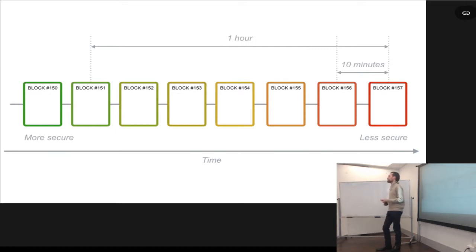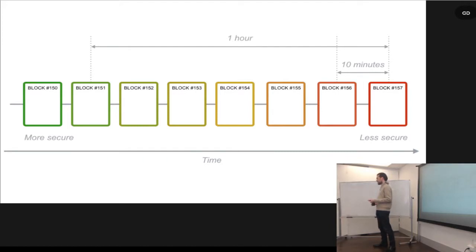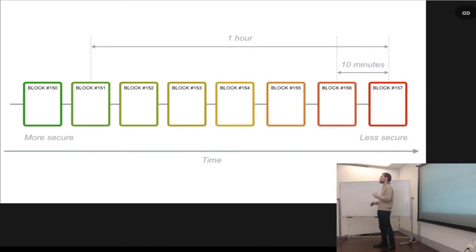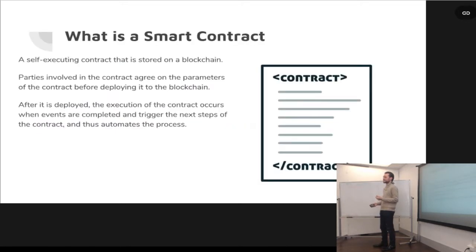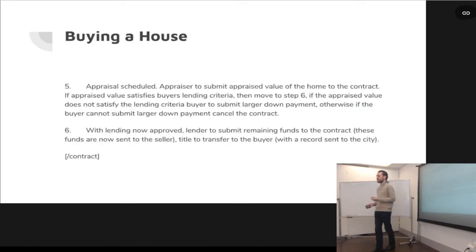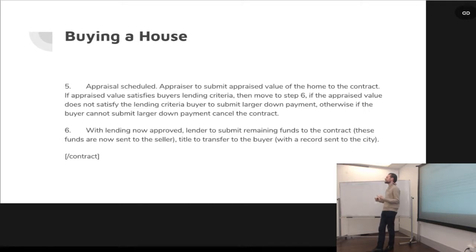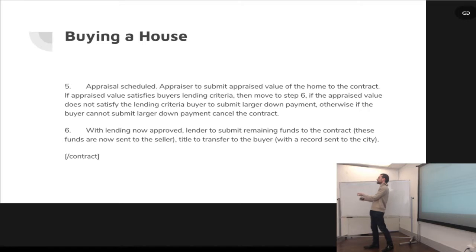The thing that would stop the seller from submitting another contract is he doesn't actually get the funds until step six, where lending is approved. Step six transfers the title and he gets the funds. So if he no longer has the title because another contract fulfilled, he wouldn't get funds from another contract.